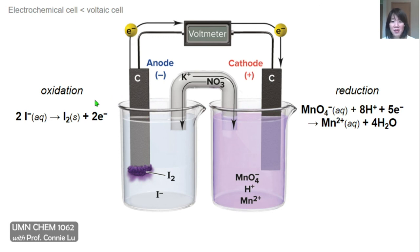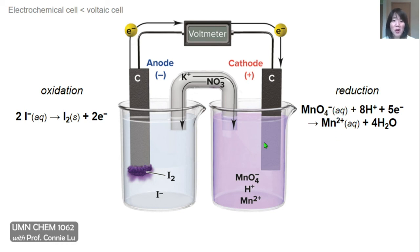At the anode, iodide ion is being oxidized to form I2. Even though I2 is a solid, it's quite brittle and not suitable as a physical material for an electrode. At the cathode, permanganate MnO4- is being reduced to manganese 2 plus ions. Both of these primary redox species are aqueous, or solvated in water, and so they are also unsuitable to act as a physical electrode. The two carbon inactive electrodes are necessary to allow these two half reactions to work in tandem in a voltaic cell.